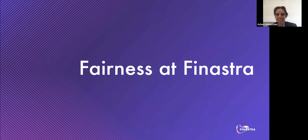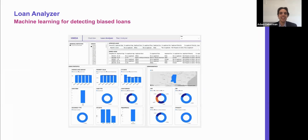So now let's talk a little bit about fairness at Finastra. The Home Mortgage Disclosure Act requires financial institutions to maintain, report, and publicly disclose loan-level information about mortgages. This data helps show whether lenders are serving the housing needs of their communities, gives public officials information to make decisions and policies, and sheds light on lending patterns that could be discriminatory. Rather than sit through tens of thousands of loans manually to identify potentially biased loans, our lab team built a proof of concept called the Loan Analyzer to do this work automatically. This can help ensure institutions are lending fairly and complying with CFPB. This concept is something we're investigating the potential to turn into production.